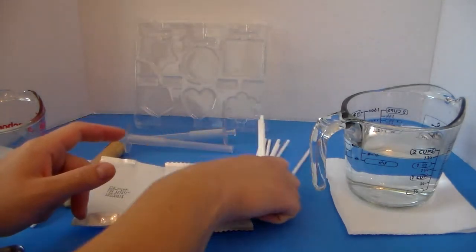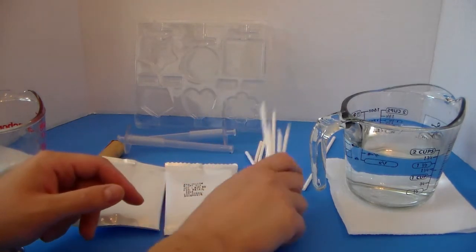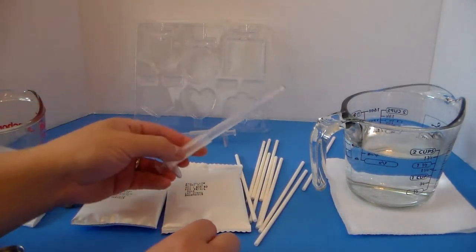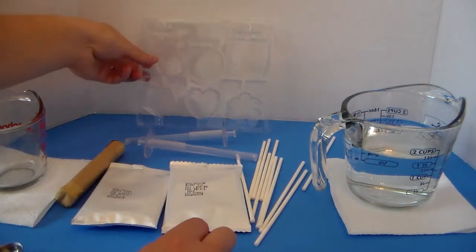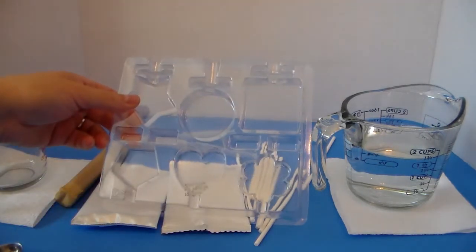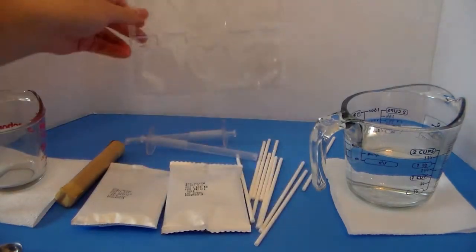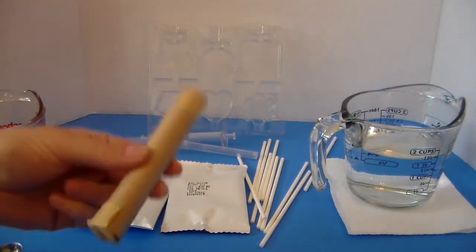And then it came with ten of these lollipop sticks and two of these plastic holders and these are used to hold the glow sticks to make them glow. And here's the tray for the molds and there are six different shapes on there and then also the glow sticks are in here.